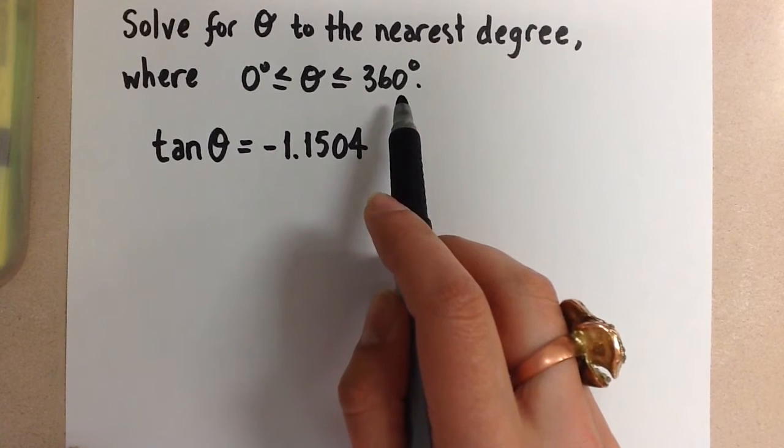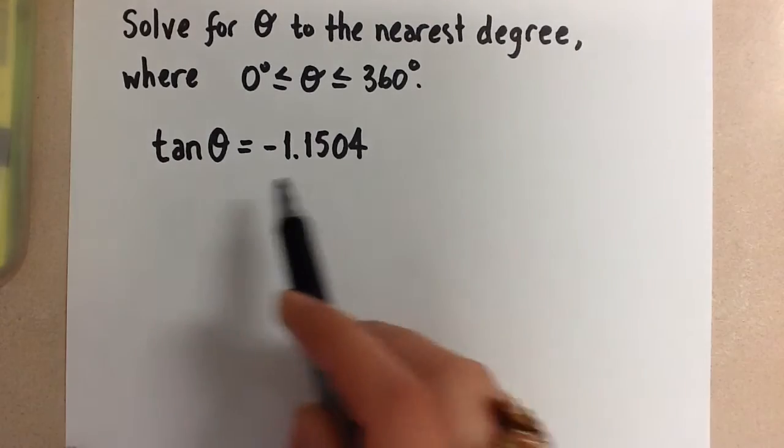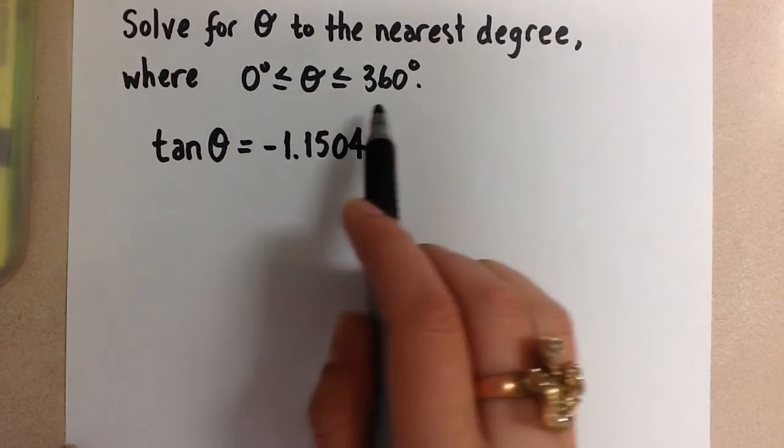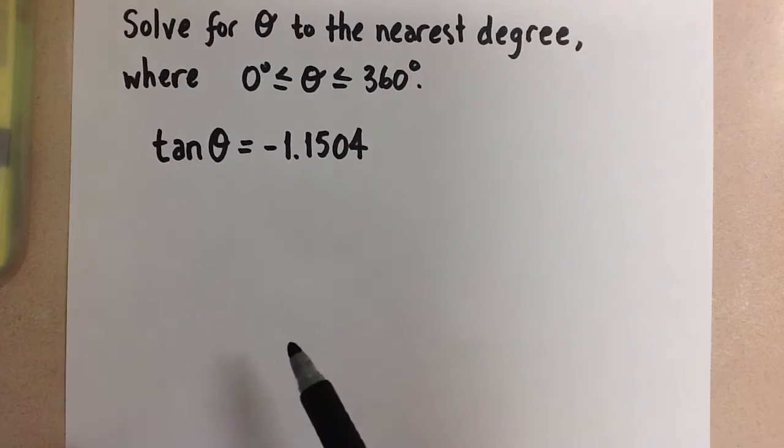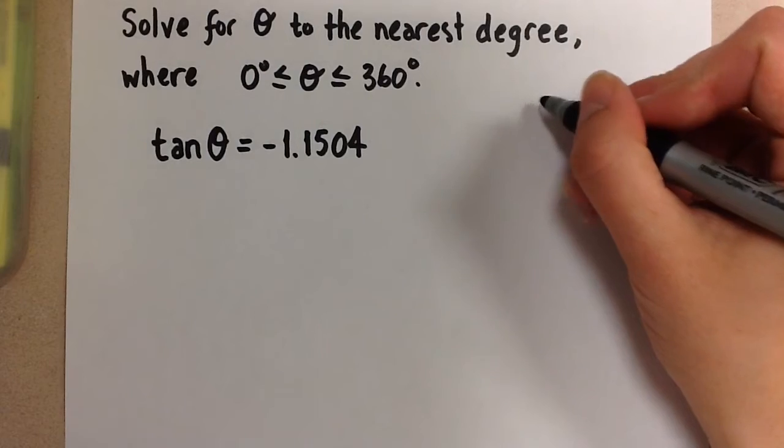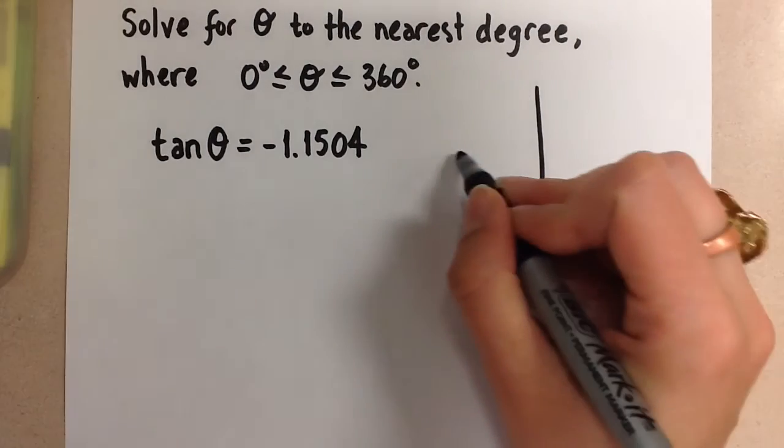This means that we're going to find every value of theta that satisfies this expression between 0 and 360 degrees. So to do this, we have to remember our CAST rule. So let's refer back to that.